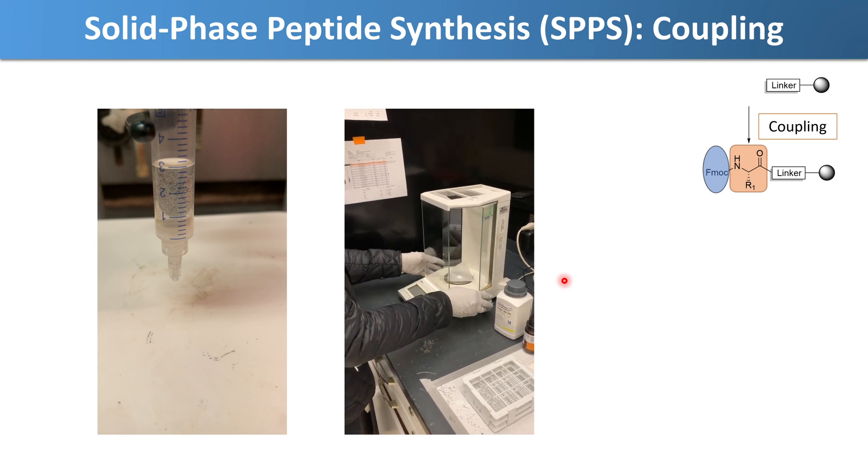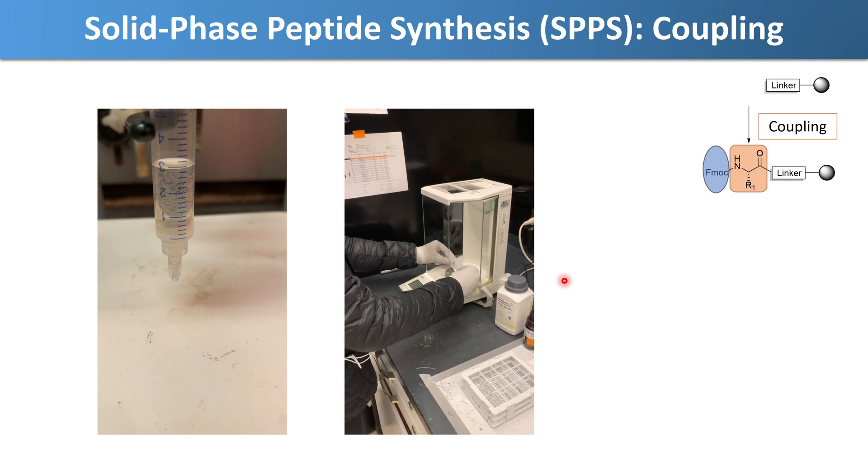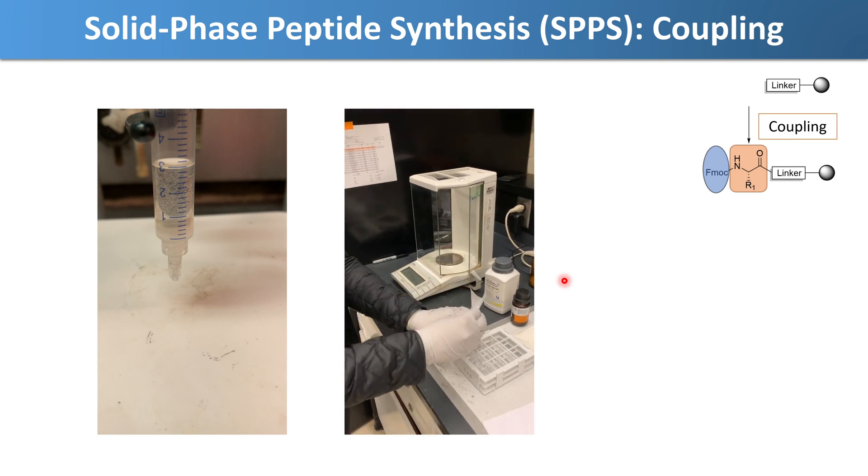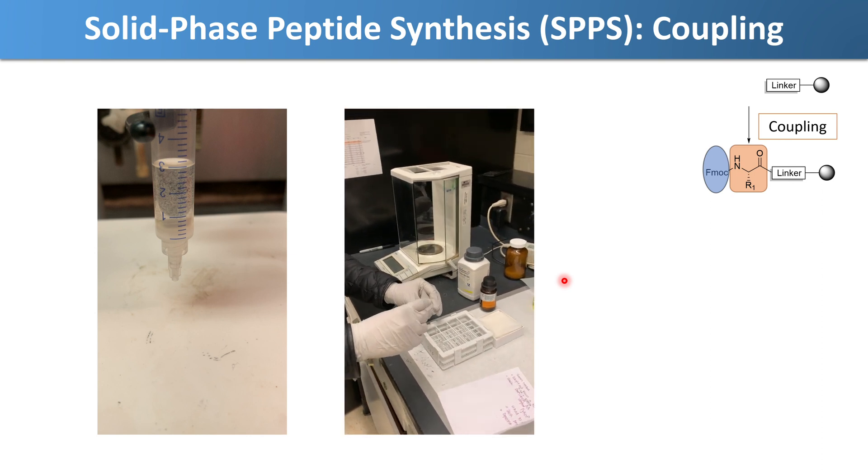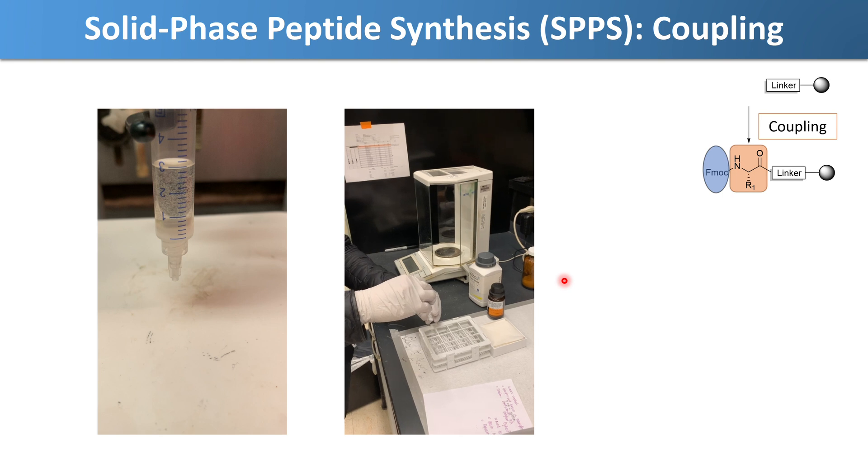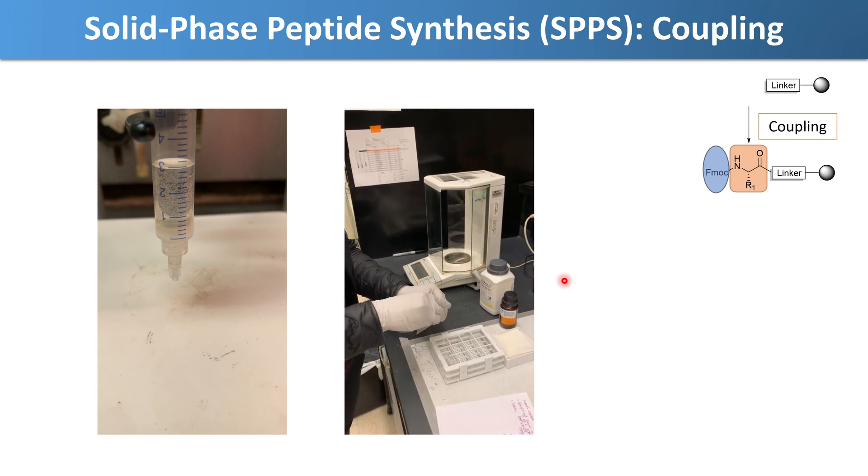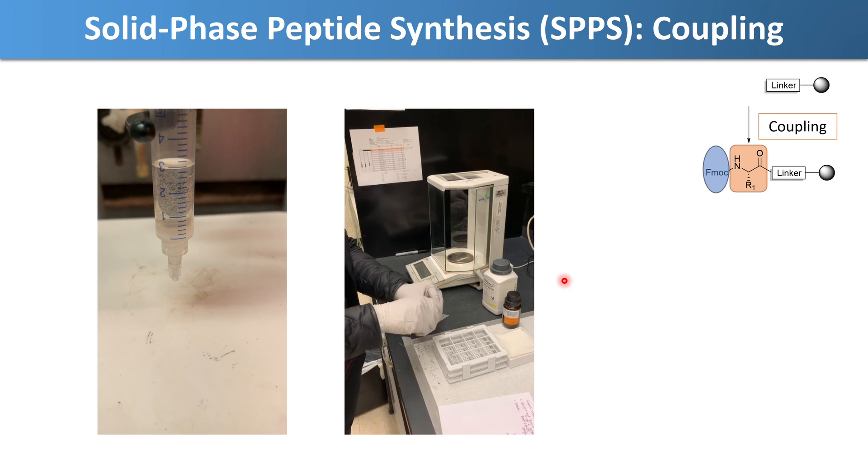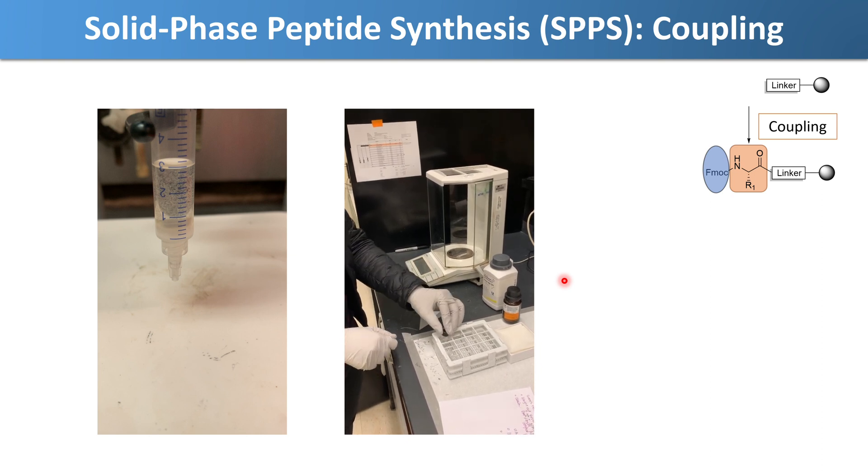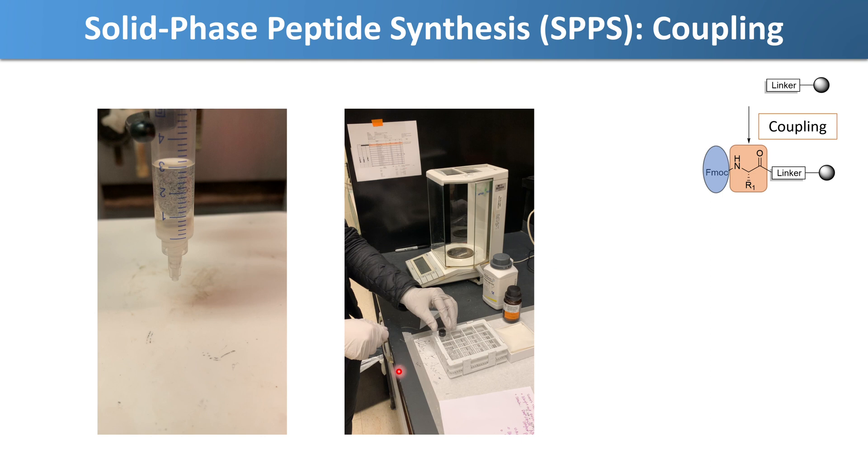Okay, I think I got it. Alrighty, so now what Huangine would do is she would dissolve up our first amino acid in some solvent and then add it to our solid support to react and to perform the coupling.